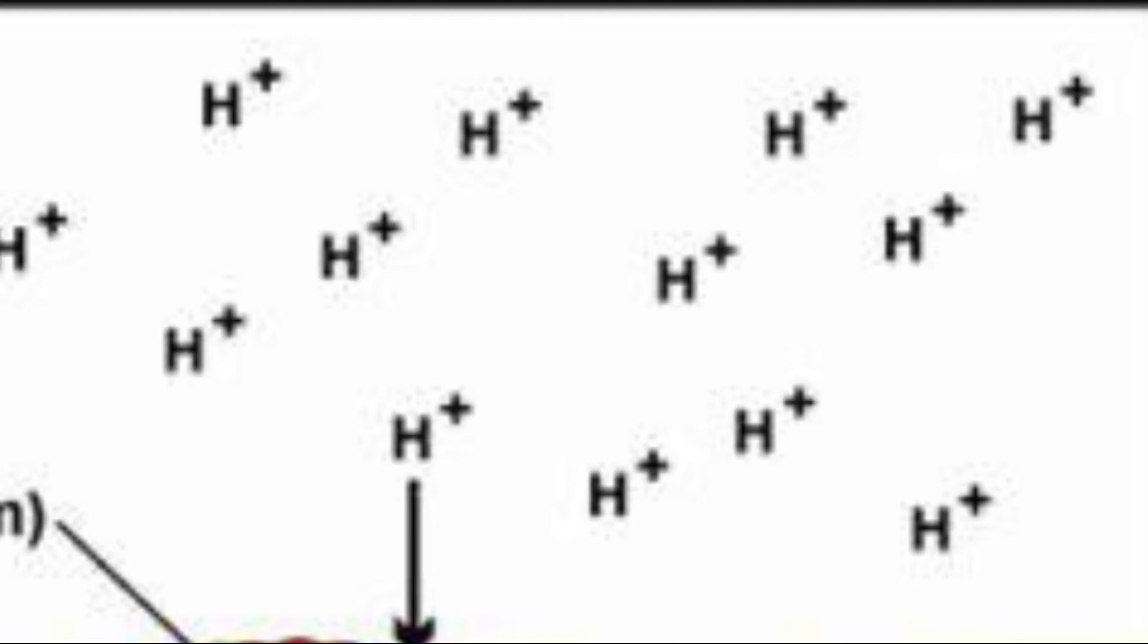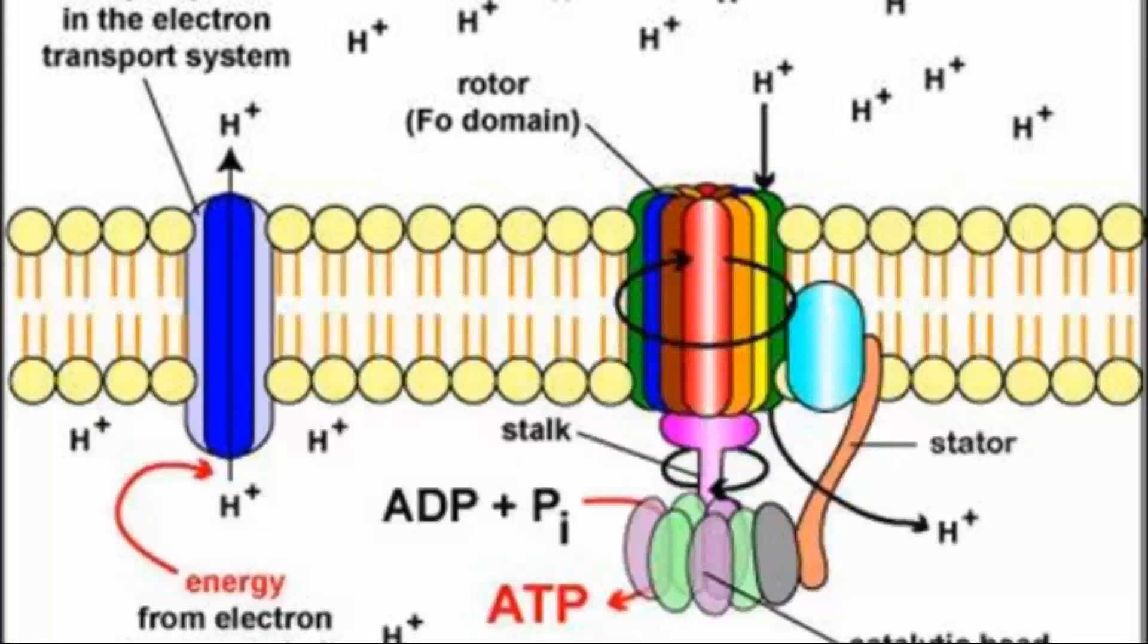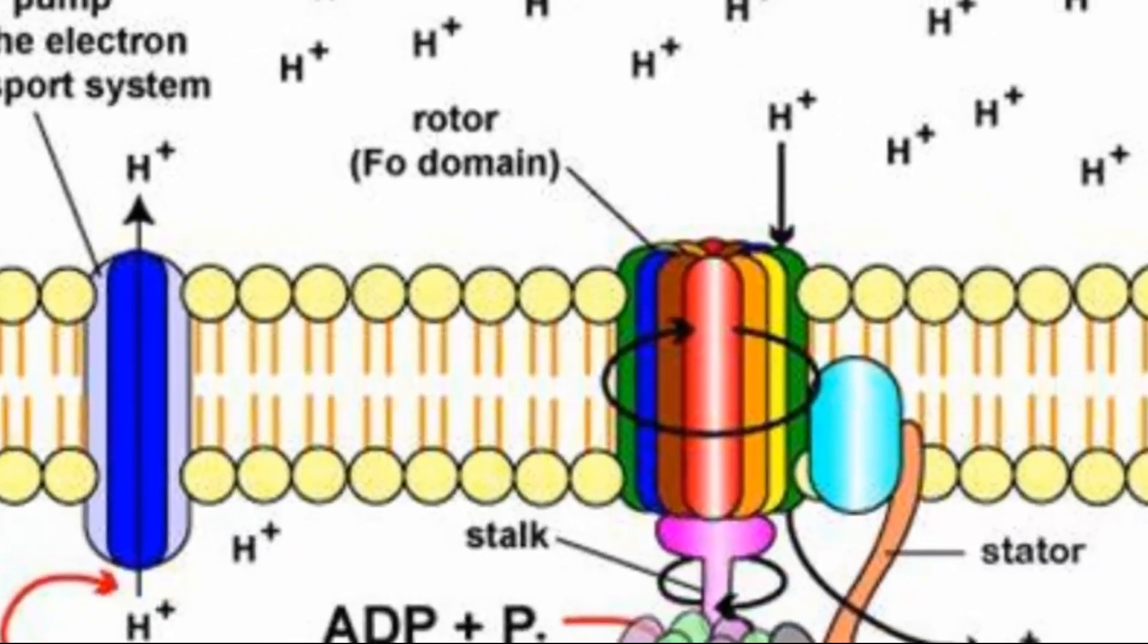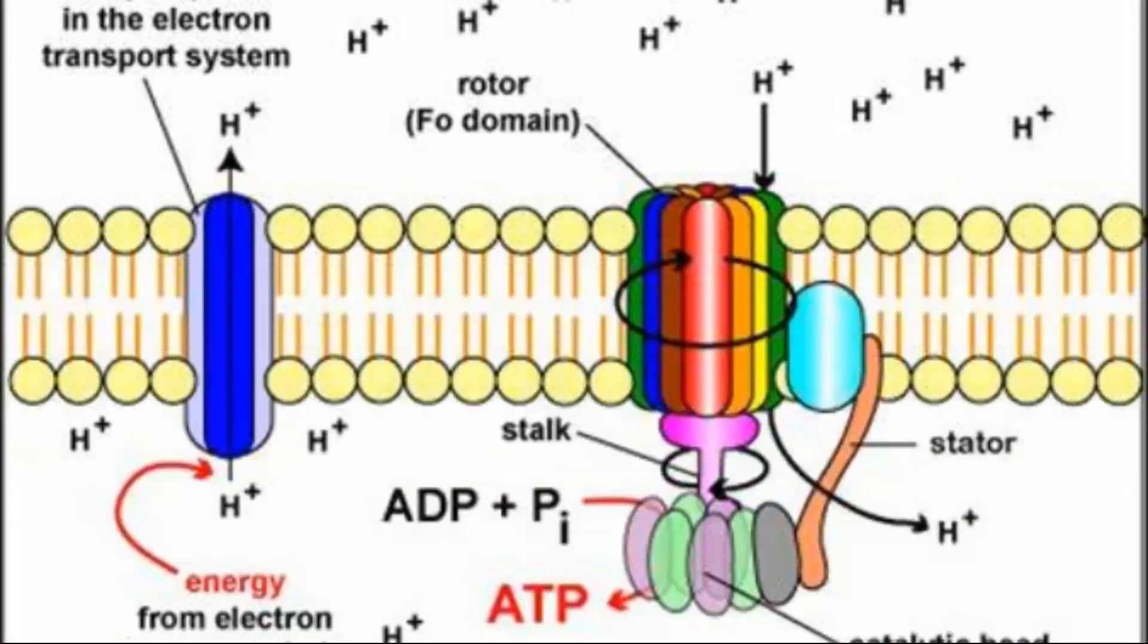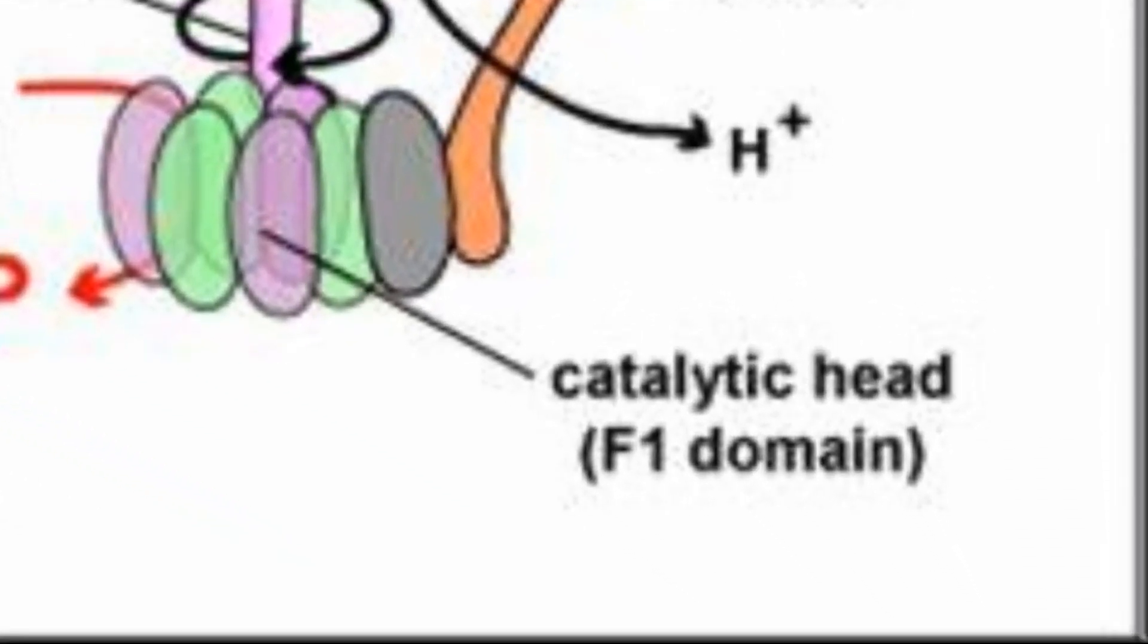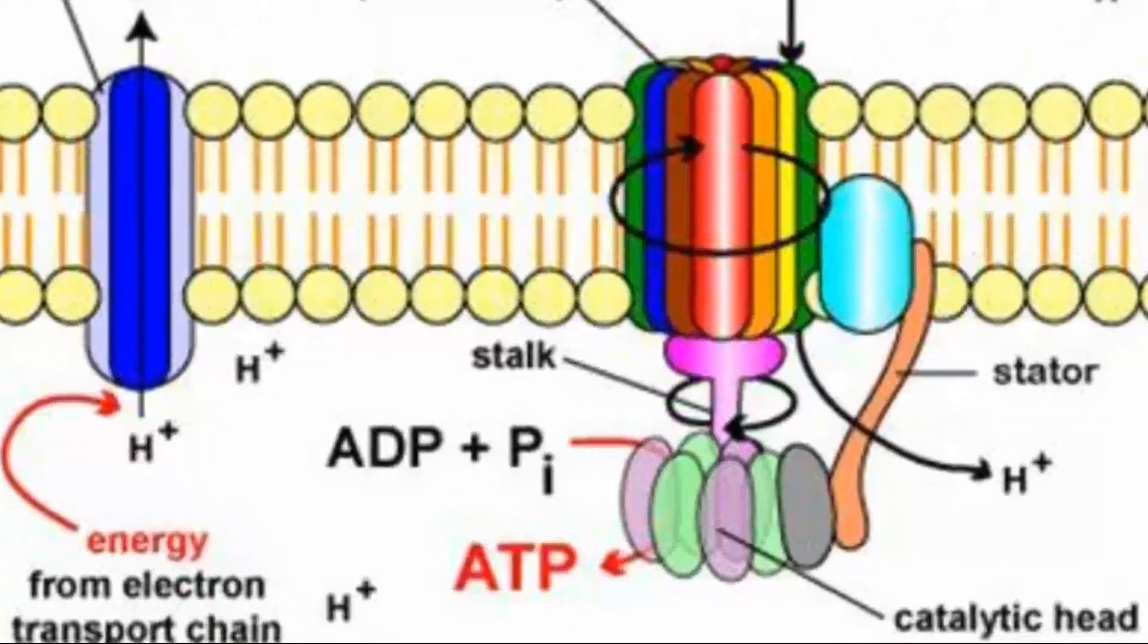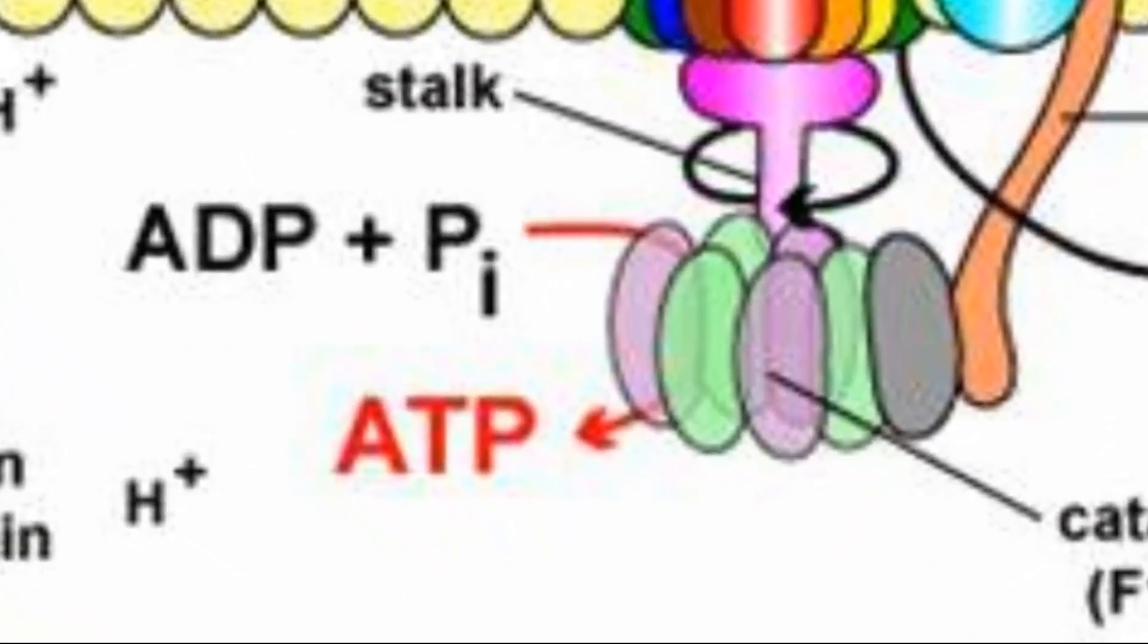Complex 5 is a protein complex that contains a domain F0 that spans the inner mitochondrial membrane and domain F1 that appears as a sphere that protrudes into the mitochondrial matrix. Complex 5 catalyzes ATP synthesis and so it's referred to as ATP synthase.